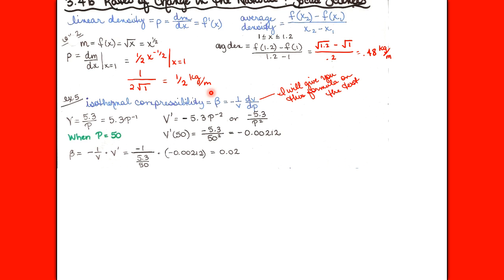On page 161, Example 3 covers current as another physics application. Average current is ΔQ/Δt — the net charge passed through a surface divided by the time interval. The instantaneous current at a particular moment is an instantaneous rate of change, i.e., a derivative. Velocity, density, and current are not the only rates of change in physics; others include power, rate of heat flow, temperature gradient, and rate of radioactive decay.